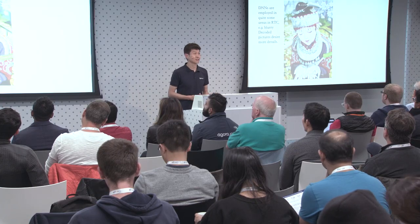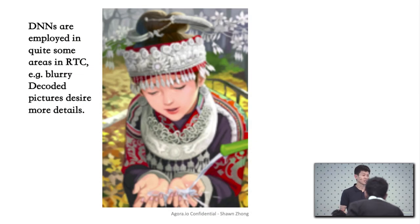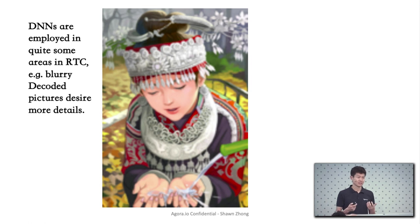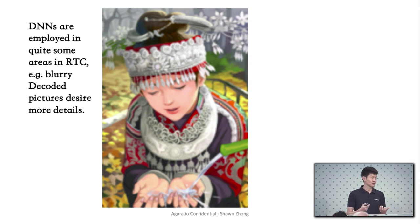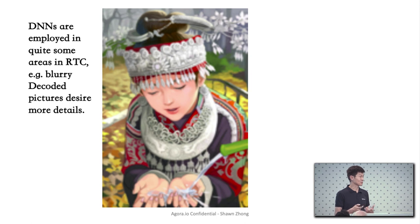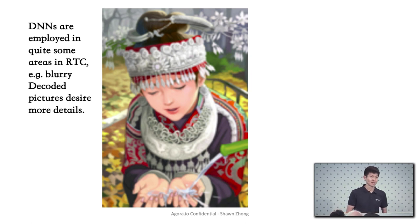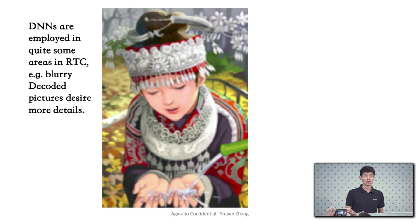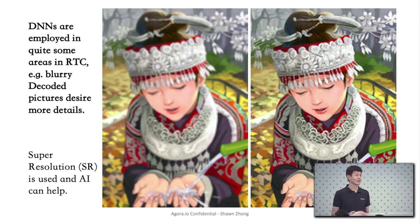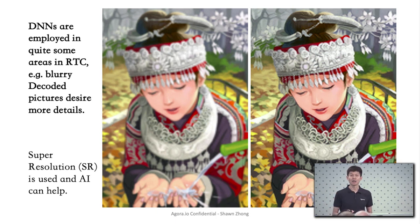We have learned that deep neural networks have been used in many areas for RTC. Another example is when the received video is blurry and the viewing experience would be negatively impacted by the blurriness and deserves some enhancement with more details. AI can help with this as well. Super resolution has been used for enhancing details, and my talk is about an AI-based super resolution algorithm.